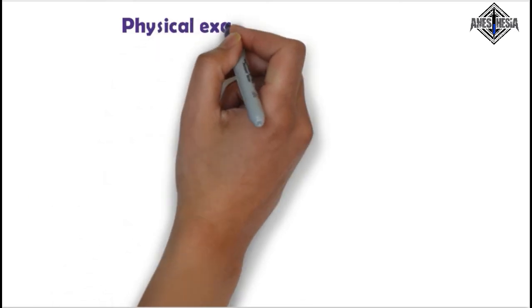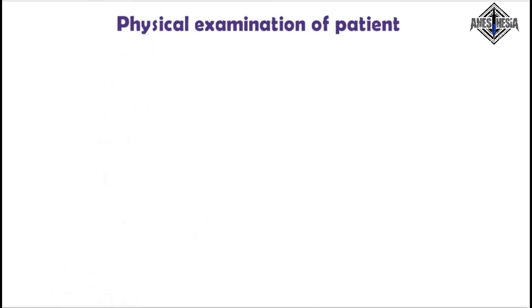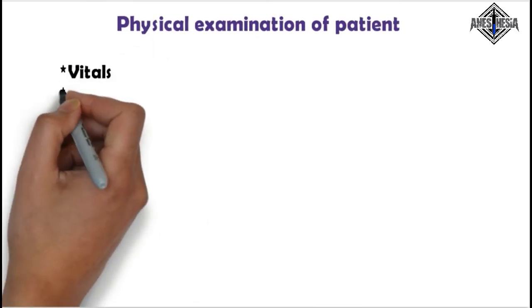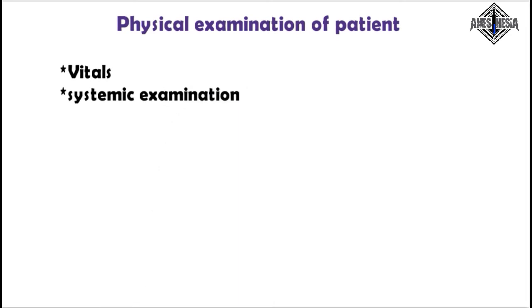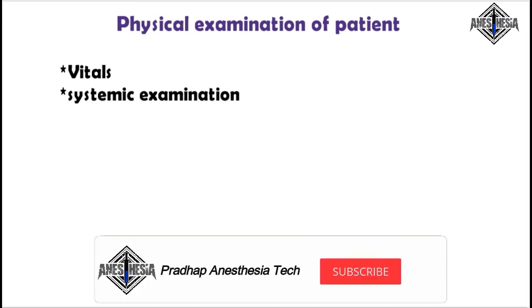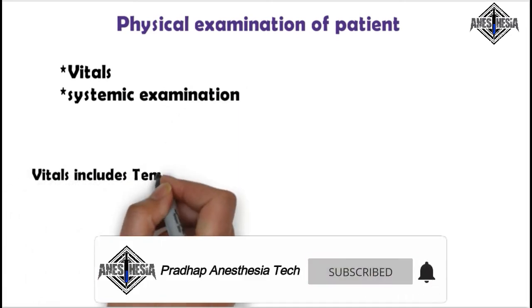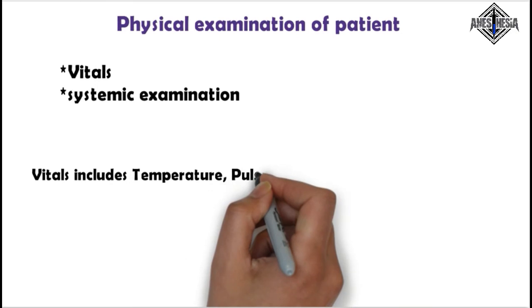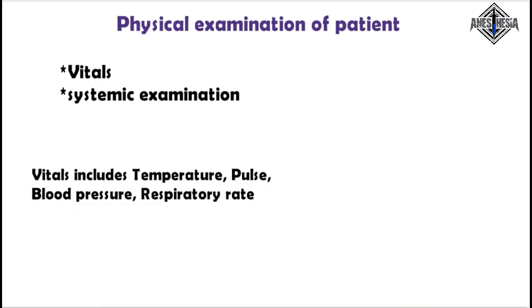Then perform a physical examination of the patient. It has two main points: vitals and systemic examination. Vitals include temperature, pulse, blood pressure, and respiratory rate.